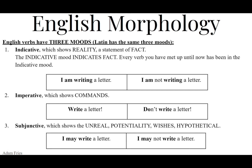Hopefully you've already watched the mood video, but if not, make sure you watch it after you finish this one. There are three moods in English, and Latin has the same three moods. The first is the indicative mood — that's the one we've been working with. The indicative indicates reality; it's a statement of fact. For example: I am writing a letter — it's happening right now, that's a fact. Or the negative: I am not writing a letter — also a fact.